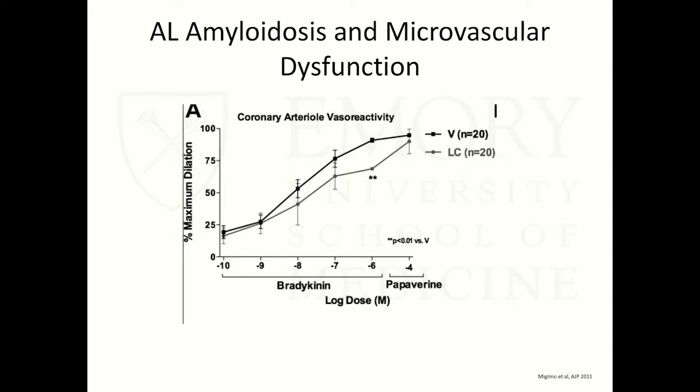We also know that AL amyloid can cause microvascular dysfunction. In a study using adipose and atrial tissue samples from patients undergoing cardiac surgery, researchers attempted to induce vascular reactivity with bradykinin. Among patients with light chains from AL amyloid, there was less vascular reactivity, suggesting a microvascular component. In fact, there are numerous case reports of patients with AL amyloid presenting with chest pain rather than classic heart failure symptoms.